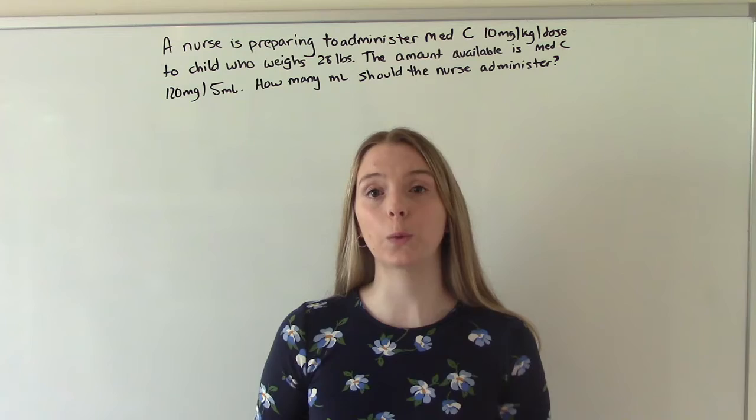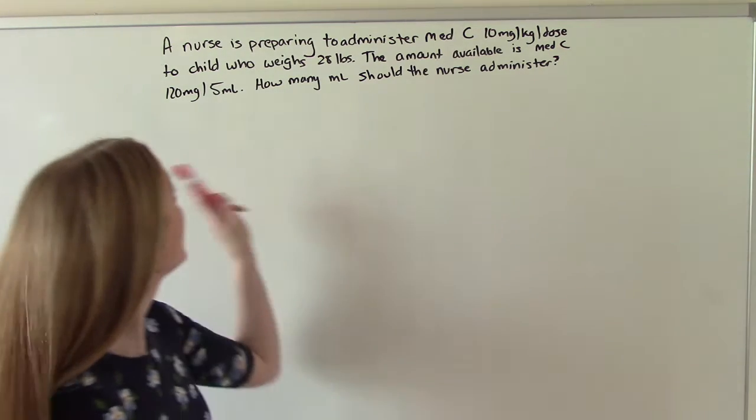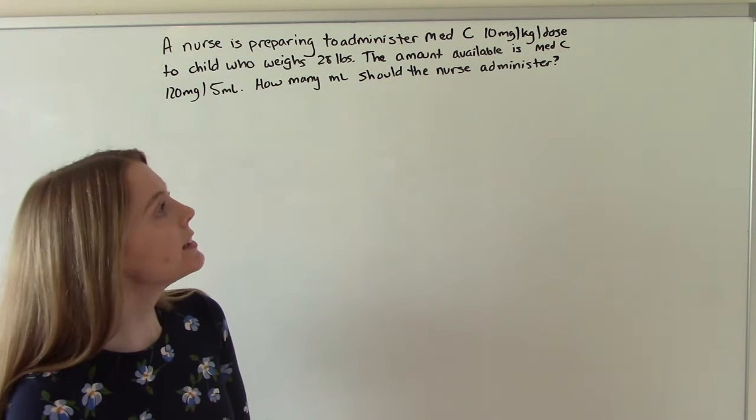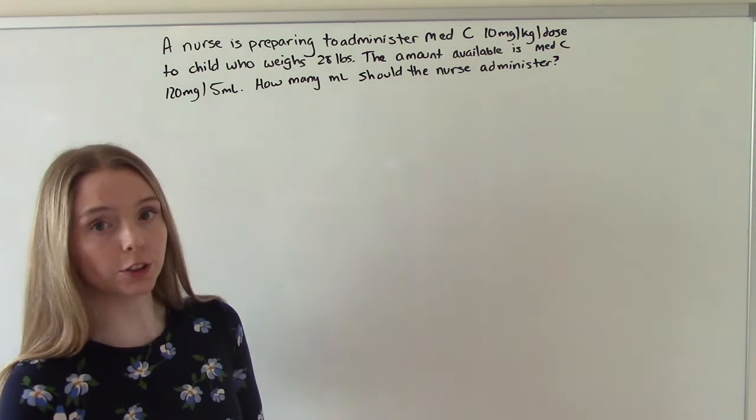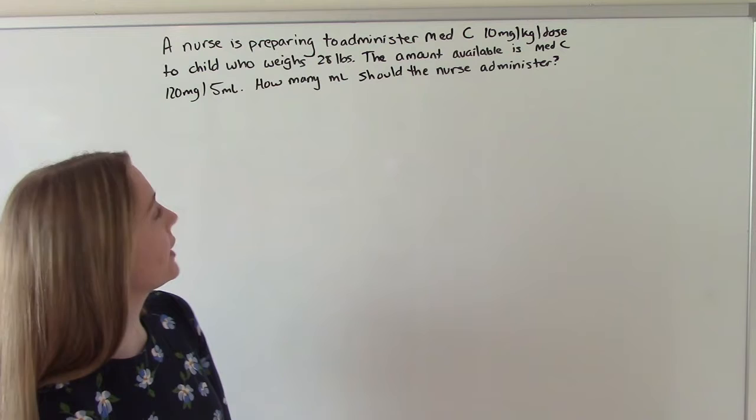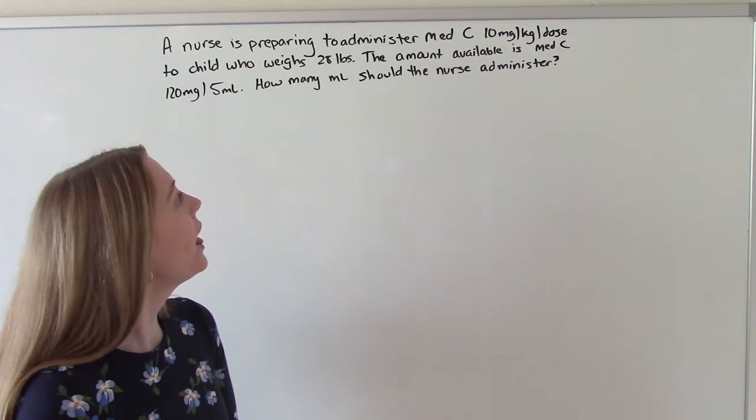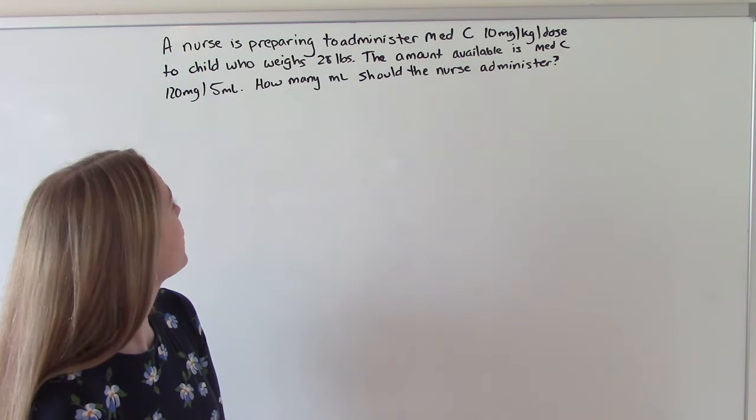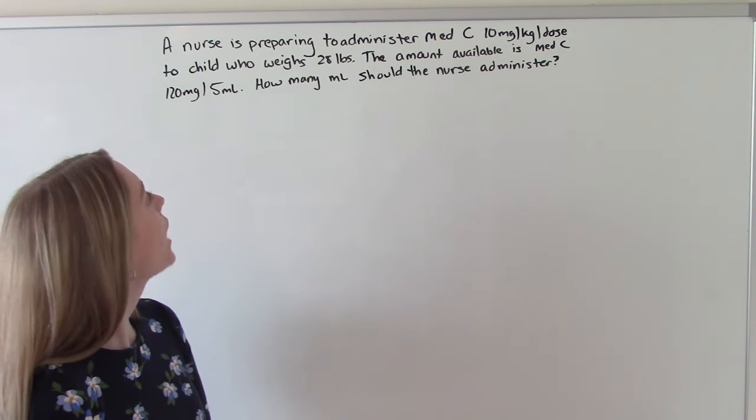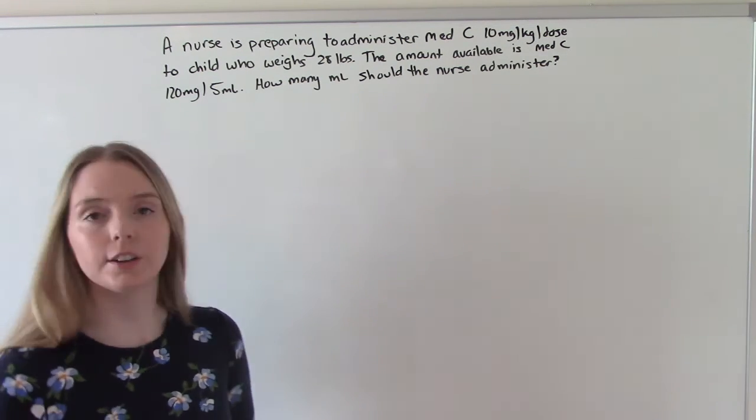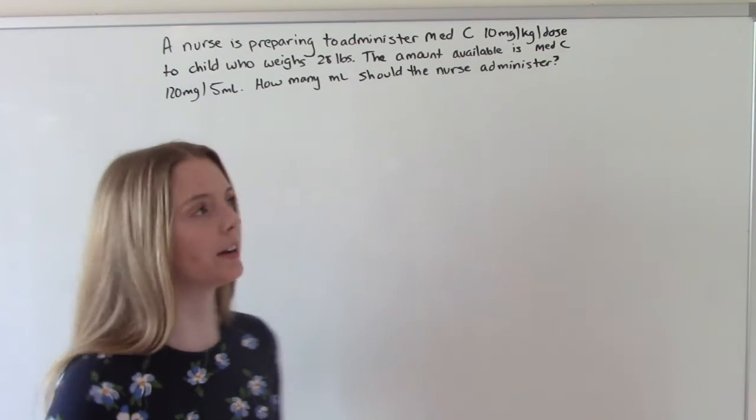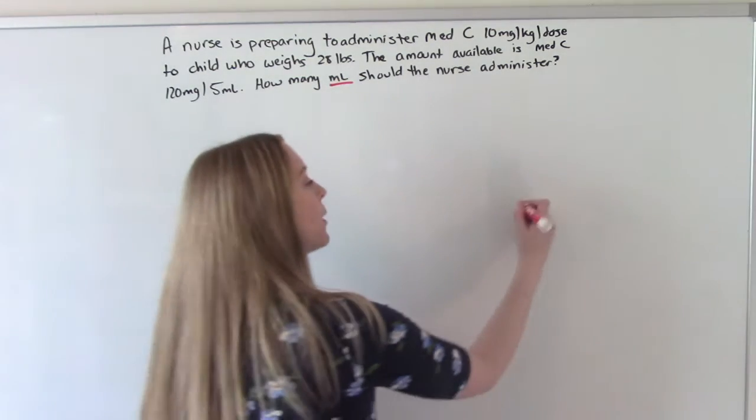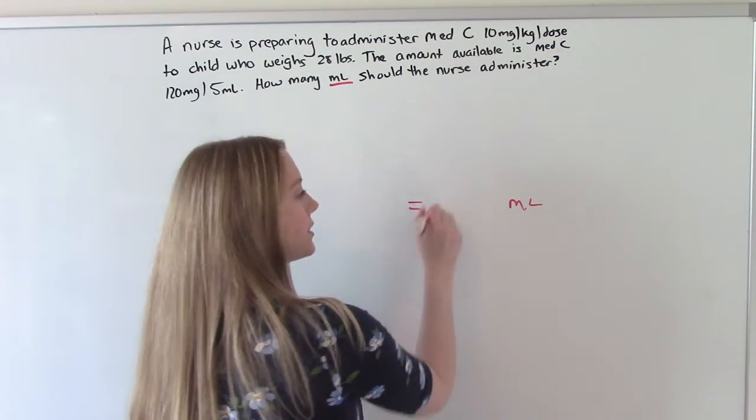Now let's do one with a child. A nurse is preparing to administer medication C, 10 milligrams per kilogram per dose, to a child who weighs 28 pounds. The amount available is medication C, 120 milligrams per 5 mLs. How many mLs should the nurse administer? And we're not going to round on this one because it doesn't say it anywhere.